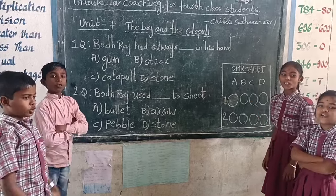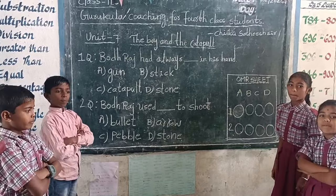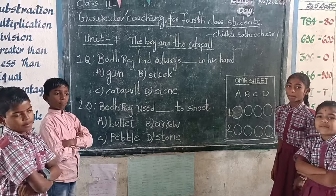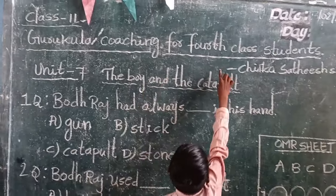We are 4th class students, M.B.B.S. Kanagutta. Class 7, Murugula, O.G.R.